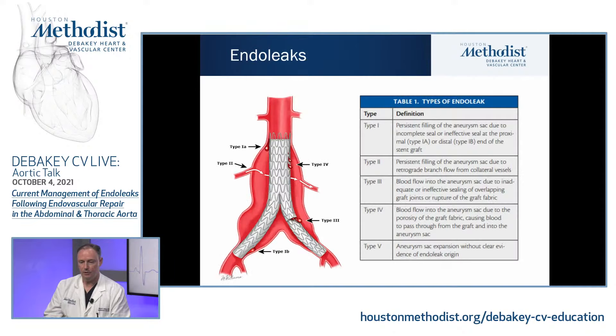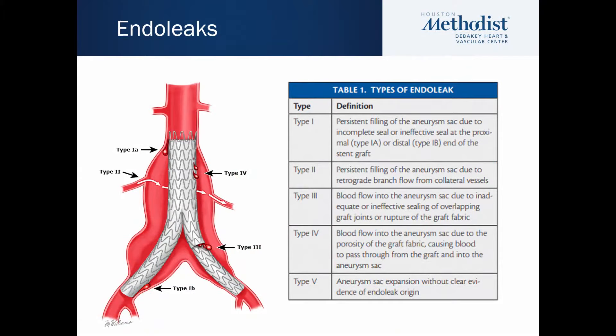Now let's talk about the classic endograft endoleak classification, types one through five. Type 1 is present or persistent filling of the aneurysm sac due to incomplete or ineffective seal at the proximal end (type 1a) or distal end (type 1b), with type 1c relating to branched and fenestrated grafts. Type 2 is a branch vessel endoleak — persistent filling of the aneurysm sac due to retrograde branch flow from collateral vessels. In the abdominal aorta, that can be from lumbar arteries or the inferior mesenteric artery; in the thoracic aorta, from intercostals, bronchial arteries, or brachiocephalic vessels such as the subclavian artery.